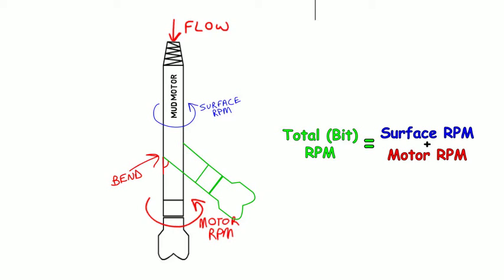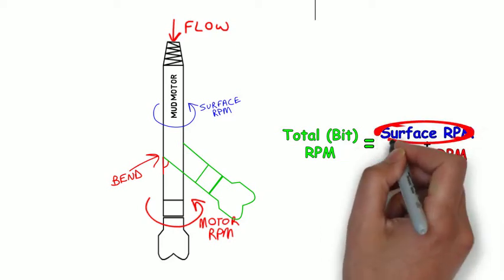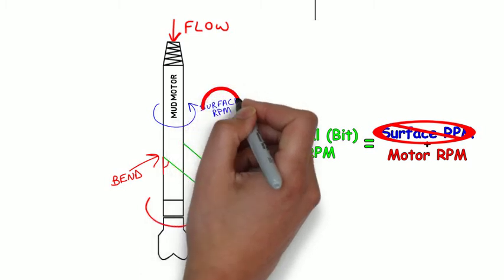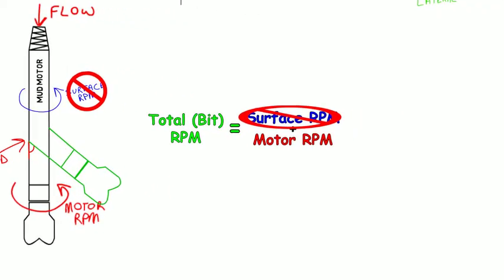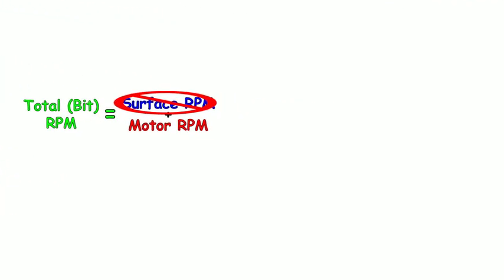But in order to drill in a specific direction, the bend in the motor has to be consistently pointed in that direction. To achieve this, the directional driller will stop the surface rotation and orient the motor in the desired direction. This process is called orienting.